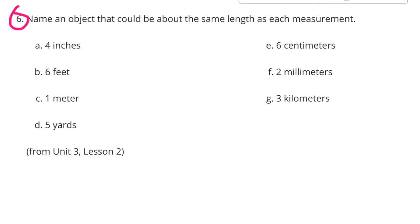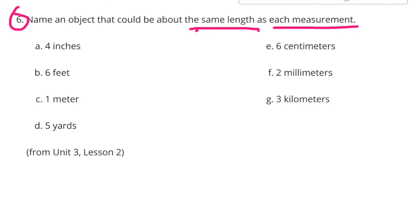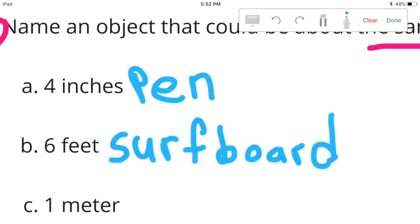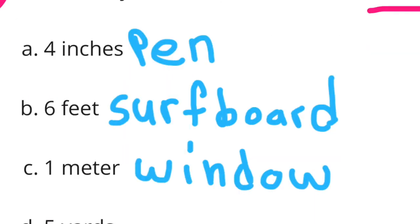Number 6: Name an object that could be about the same length as each measurement. A: Four inches - that's a pen. B: Six feet - that's a surfboard. C: One meter - that's a window.